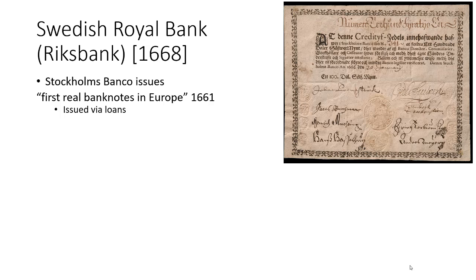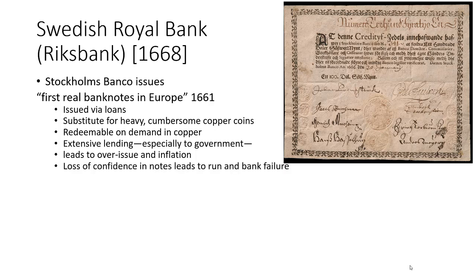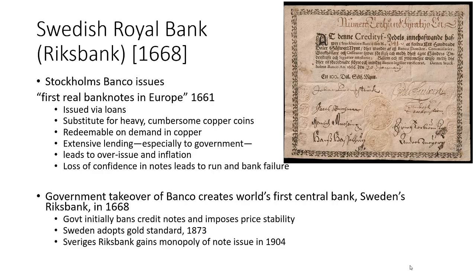The bank notes substituted for heavy copper coins and were redeemable on demand. The Stockholms Banco did extensive lending, especially to their government — you can see that fiscal role very early in central banking development. But lending too much to the government can lead to inflation, and that's what happened with the Stockholms Banco, leading to a collapse and government takeover. This made it technically the world's first central bank, becoming the Swedish Royal Bank — the Riksbank — in 1668.